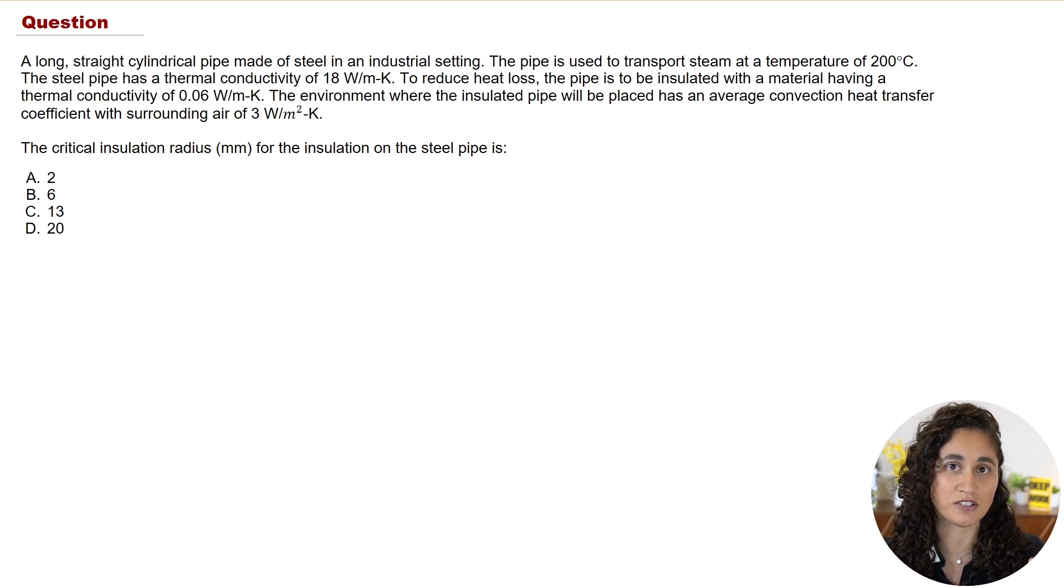Now the other thing, guys, to keep in mind is that at the critical insulation radius, increasing the conductive resistance from the added insulation offsets the decreasing convective resistance due to the larger surface area. Okay, so these are just concepts behind the critical insulation radius in case you guys get a conceptual question on this.